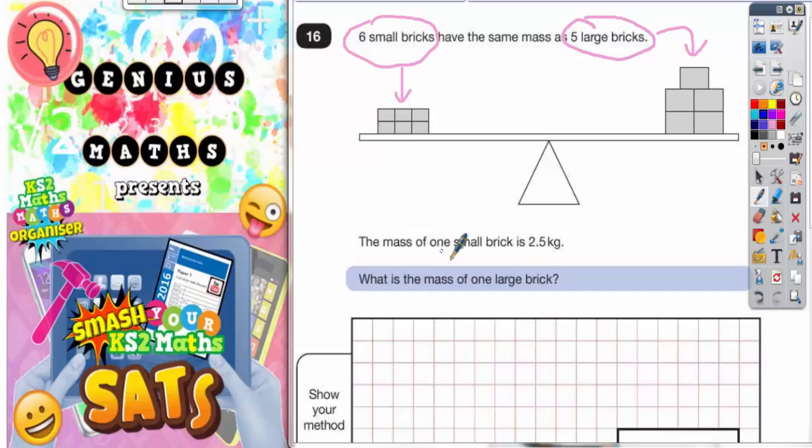Well, if the small brick is 2.5 kilograms, then this means that each one of these bricks is 2.5 and we've got six of them. So what we need to do is figure out 6 lots of 2.5.